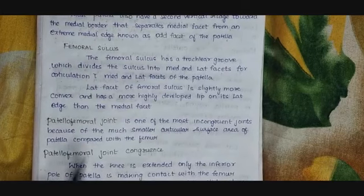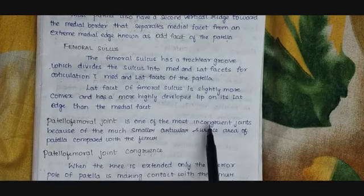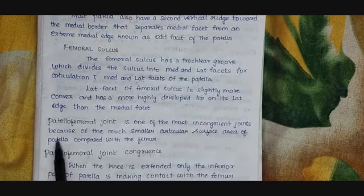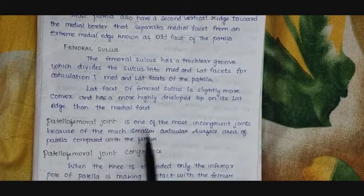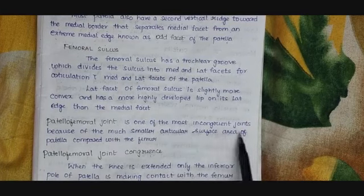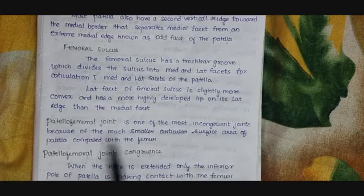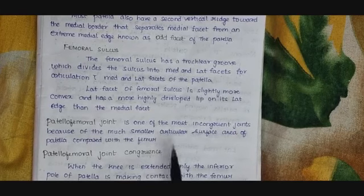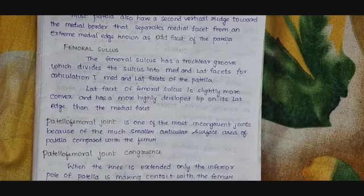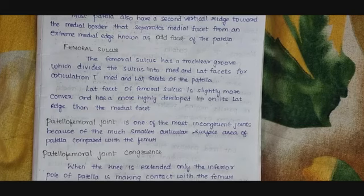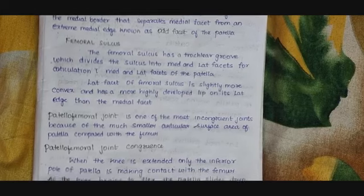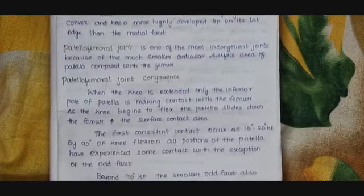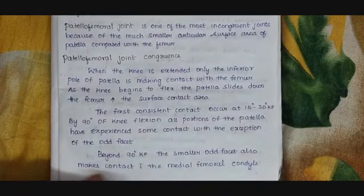The patellofemoral joint is one of the most incongruent joints because of the much smaller articular surface area of the patella when compared with the femur. So the patellofemoral joint is an incongruent joint because the articular surface of the patella is very much smaller when compared to the articular surface of the femur. Now let us discuss about the patellofemoral joint congruence in detail.